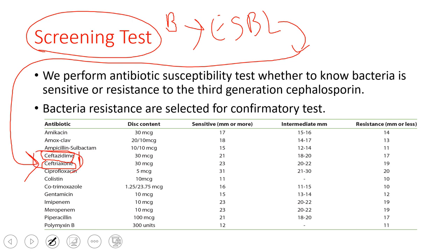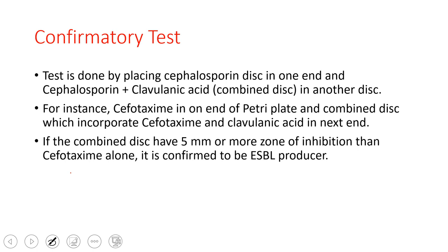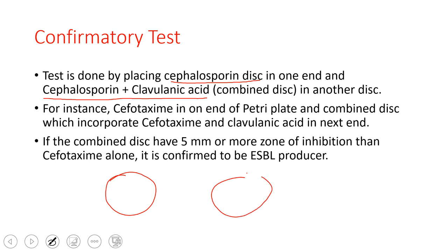In the confirmatory test, you have to take one cephalosporin disc — a plain cephalosporin — and in the next you take the cephalosporin plus clavulanic acid. There will be two discs. If the bacteria are resistant towards the cephalosporin, we do the confirmatory test. If the bacteria are sensitive, we won't do the confirmatory test, because sensitivity confirms the bacteria are not ESBL producers. Only resistant bacteria are taken forward.